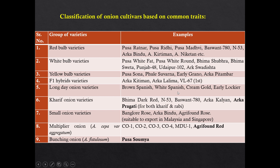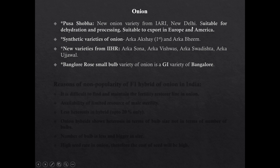Long day varieties of onion are Brown Spanish, White Spanish, Cream Gold, and Early Docker. Kharif onion varieties are Bhima Dark Red, N53, Basman 780, Arka Kalyan, and Arka Pragati. Small onion varieties are Bangalore Rose, Arka Bindu, and Agrifound Rose. Multiplier onions are Co-1, Co-2, Co-3, Co-4, mostly cultivated in South India, mainly Tamil Nadu — useful in sambar preparation. Bunching onion variety is Pusa Savya; bunching onion is Allium fistulosum. Pusa Shoba is a new variety from IARI — suitable for dehydration, processing, and export to Europe and America. Synthetic varieties of onion are Arka Akshay and Arka Beam; Arka Akshay is the first synthetic variety of onion in India. New onion varieties from IARI are Arka Sona, Arka Vishwas, Arka Swaadishtha, and Arka Ujwal. Bangalore Rose is a small bulb variety of onion — it is a GI variety of Bangalore.